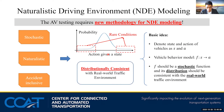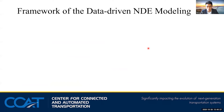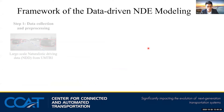To further extend this idea, we denote the state and action of vehicles as S and A. The vehicle behavior model is actually a function, a mapping from the state to action space. The function should be a stochastic function, and its distribution should be consistent with the real-world traffic environment. Therefore, we propose the framework of data-driven naturalistic driving environment modeling.